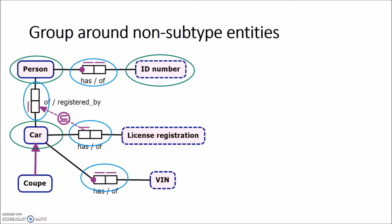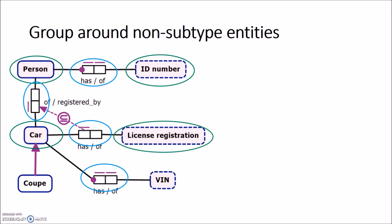Next we have 'license registration', so we add a table for it. All the fact types are already marked, so there are no possible columns for this table. The same applies for 'VIN' — just add a table with name VIN without any columns.